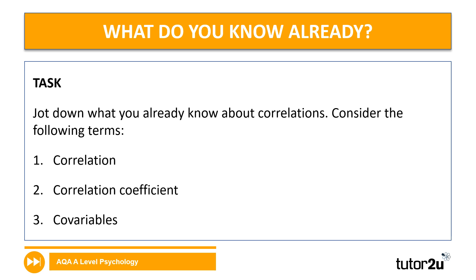The first question is: what do you know already? There are three important terms here related to correlations — correlation, correlation coefficient, and co-variables. There is space in your booklet where I would like you to pause the video and jot down what you already know related to these terms.